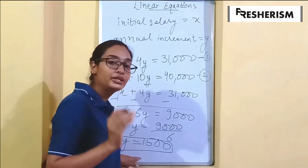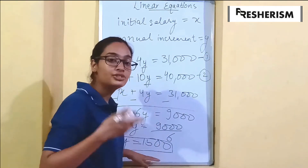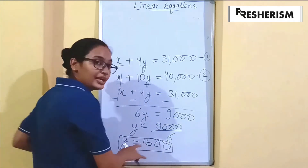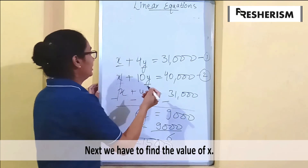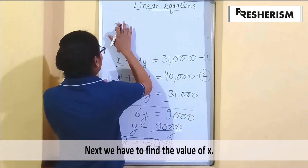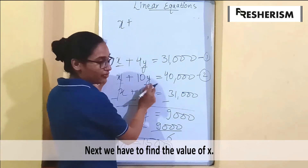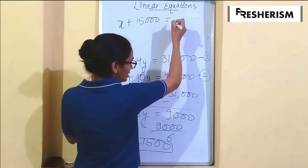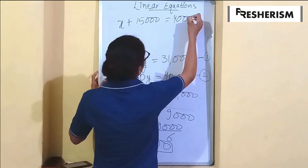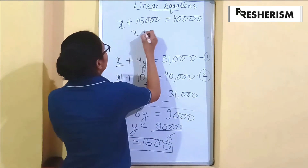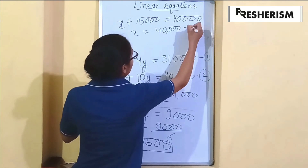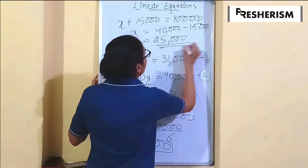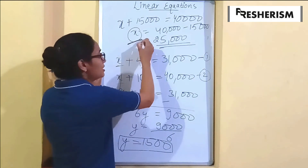Now we have y, so we find x by substituting the value of y into the second equation. x plus 10 times 1,500 equals 40,000, so x plus 15,000 equals 40,000. Therefore x equals 40,000 minus 15,000, which equals 25,000. So x, his initial salary, is 25,000 rupees.